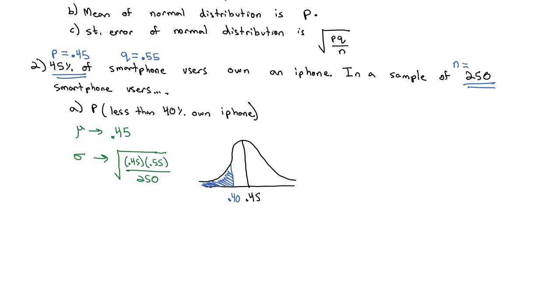We can do this in Excel using the normal distribution command by typing equals NORM.DIST, open parenthesis. The value we're interested in is 0.4, comma. The mean, we're using 0.45, the proportion. The standard deviation, we're using this square root. We'll type SQRT for the square root, open parenthesis.